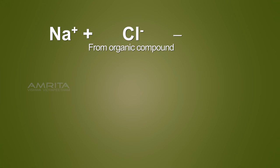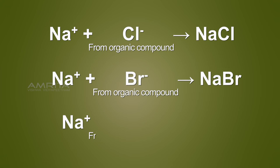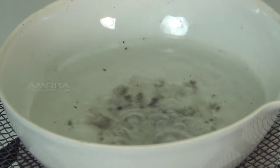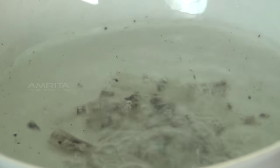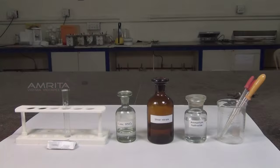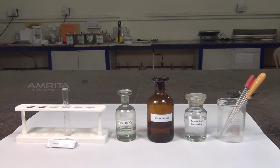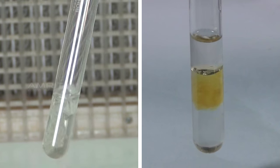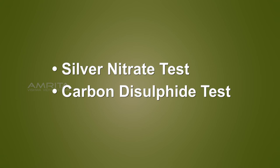Upon fusion with sodium metal, the halogens in the organic compound are converted to ionic sodium halides. Ionic sodium halides can be extracted by boiling the fused mass with distilled water and are used for the detection of halides. Our aim here is to detect the presence of halogens in an organic compound. There are two tests to detect the presence of halogens: the Silver Nitrate Test and the Carbon Disulphide Test.